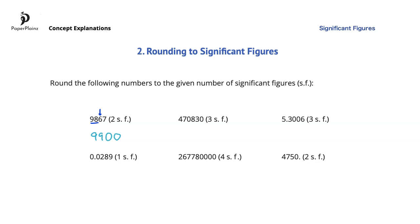In the next number, the first three significant figures are 4, 7 and 0, so we will round based on the 8. We need to round the 0 between the 7 and the 8 up, so we get 4, 7, 1. And the last three digits become zeros, so we end up with three significant figures in this number.